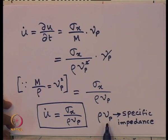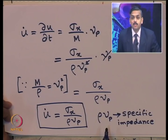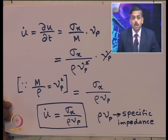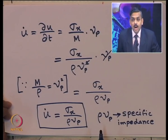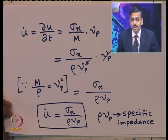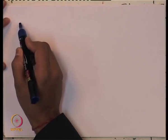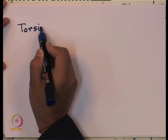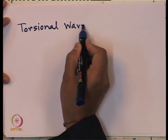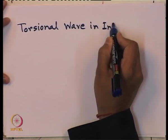In general, specific impedance is the product of the material density with the velocity of a particular wave travelling through a particular media. It can be V_p for a longitudinal wave, or V_s for a torsional wave. Now let us come to the next type of wave, which is the torsional wave. Let us start deriving the torsional wave equation in an infinite rod.